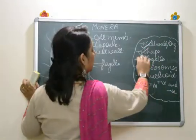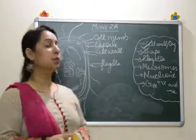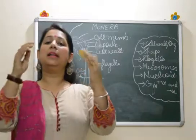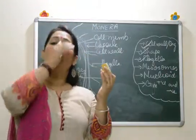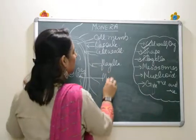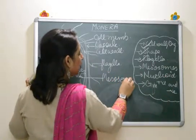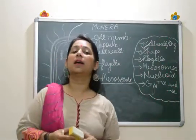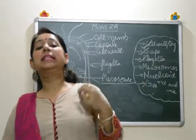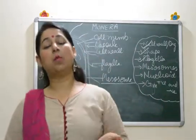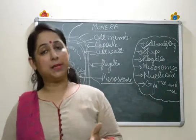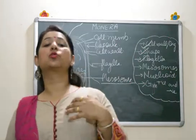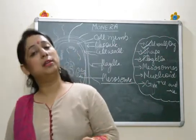We have discussed cell wall, shape, and flagella. Next is the mesosome. When the cell membrane invaginates and folds inside, it forms a structure known as a mesosome. The role of the mesosome is not entirely clear, but there are assumptions that it helps in cell wall synthesis and also in cellular respiration. Since bacteria do not have mitochondria, the mesosome helps provide energy to the bacteria through cellular respiration.